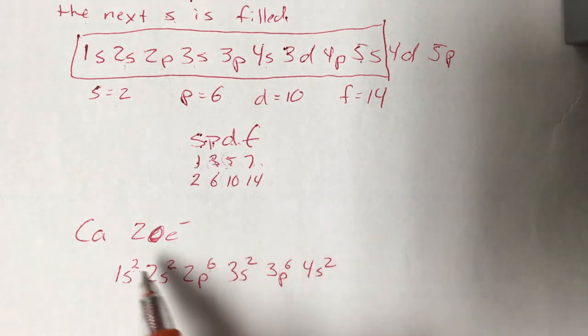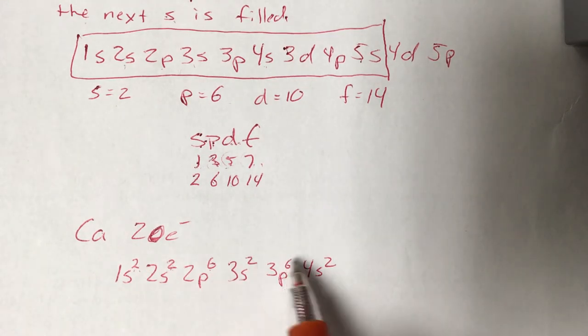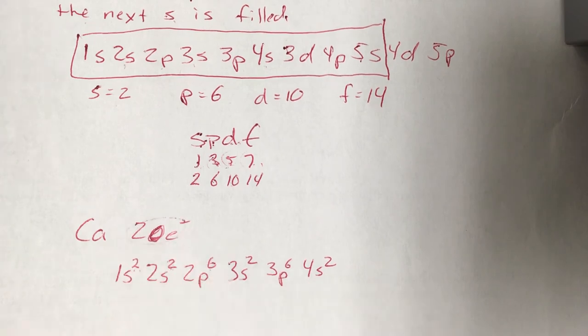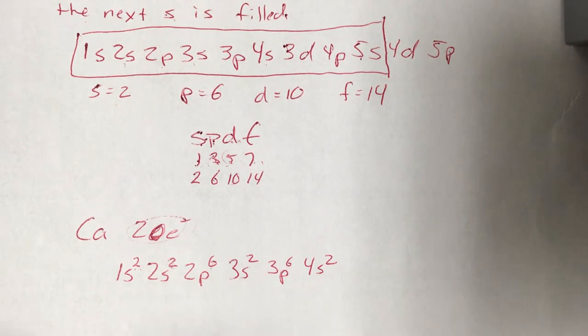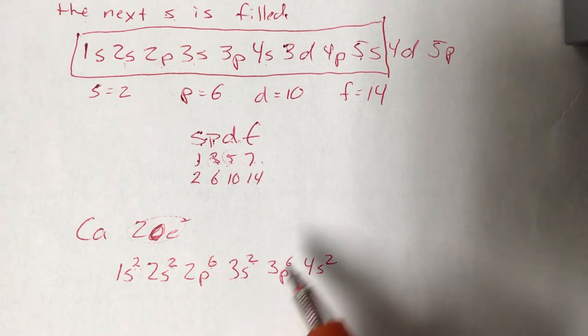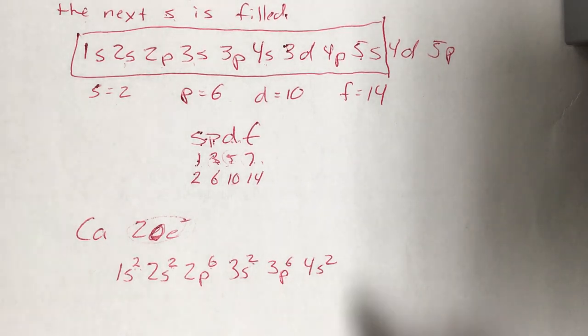When you're all said and done, these exponents, the number of electrons, has to equal your total that you started with. 2 plus 2 is 4, plus 6 is 10, plus 2 is 12, plus 6 is 18, plus 2 is 20. So we're good to go.